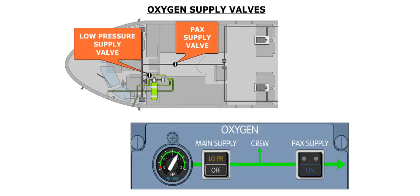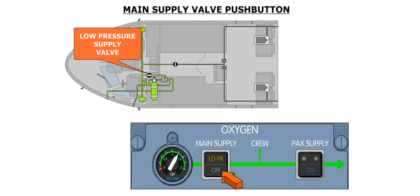Oxygen from the bottle is distributed to the flight crew through a low-pressure supply valve. A passenger supply valve, located downstream of the low-pressure supply valve, controls the distribution of oxygen to the passenger oxygen system. The low-pressure supply valve is open when the main supply push button on the oxygen panel is in the in position. Once the valve opens, reduced pressure oxygen is available to the flight crew and passenger oxygen system, if the passenger supply valve is open.